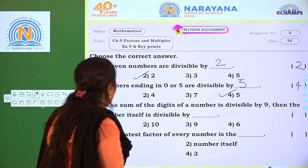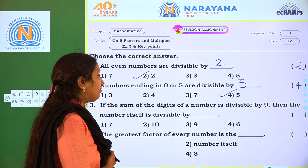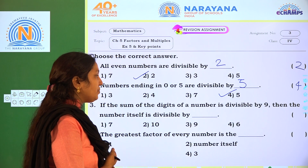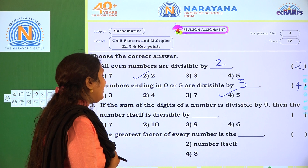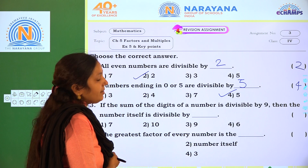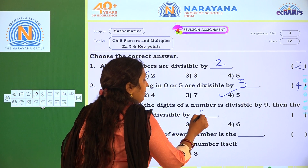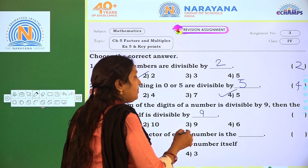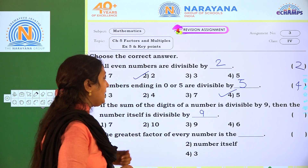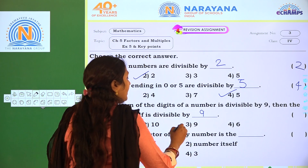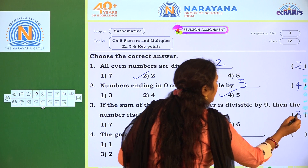Next one: if the sum of the digits of the number is divisible by 9, then the number itself is divisible by 9. Which is the correct option, children? Option 3.